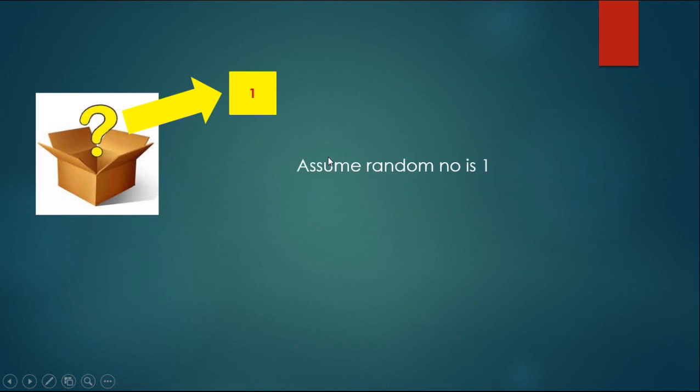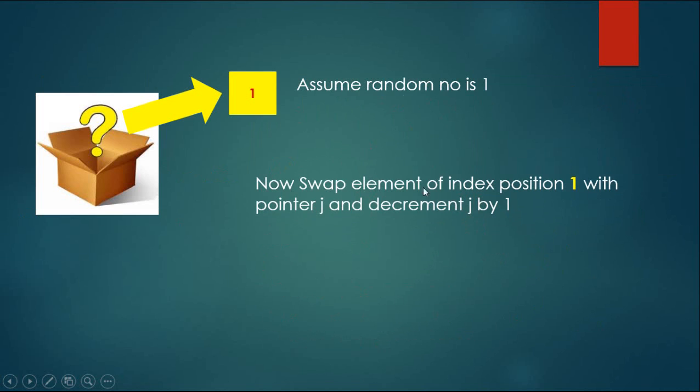Pass 1. Assume random number is 1. Now swap element of index position 1 with pointer j and decrement j by 1.